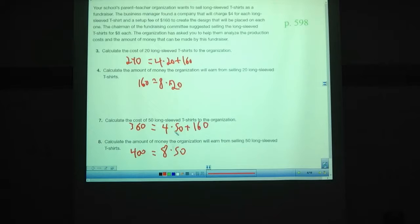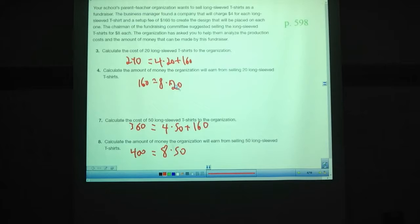So, let's look at this, let's now look at graphing these. We could write an equation, y = $4 per shirt, so 4x plus the $160 we're paying each time. And then, for how much money we make by selling them, y = 8x, $8 per shirt, times x number of shirts. We could graph this.